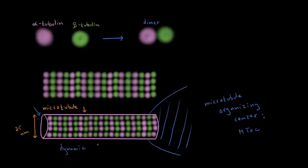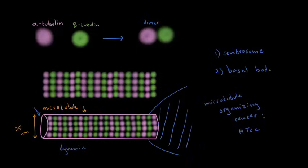It's important for microtubules to be able to become longer or shorter in order to fulfill their functions. There are actually different types of microtubule organizing centers, and we're going to talk about two. The first is the centrosome, and the second is called a basal body. Centrosomes and basal bodies are pretty similar in structure, but the microtubules attached to them carry out different functions.